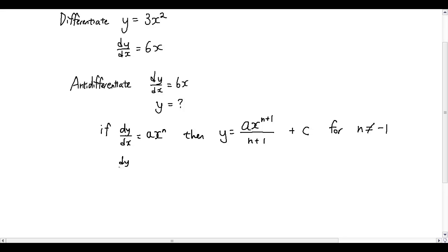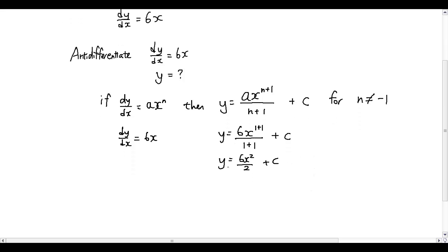So now we have dy over dx equals 6x and we want to know what y is equal to. So applying the formula, a is equal to 6 and we have x. n is equal to 1, so it's 1 plus 1, plus c because we don't know what c is. So simplifying that we have 6x to the power of 2 over 2 plus c and simplifying again we have y equals 3x squared plus c.